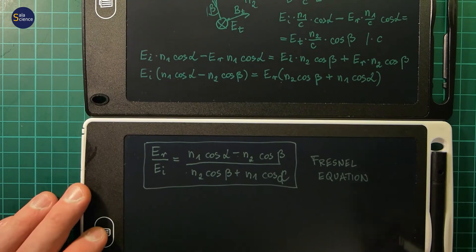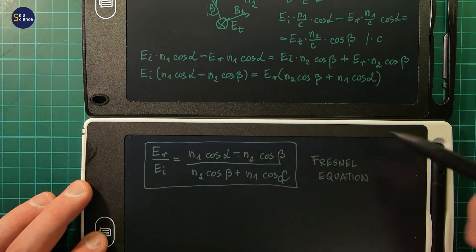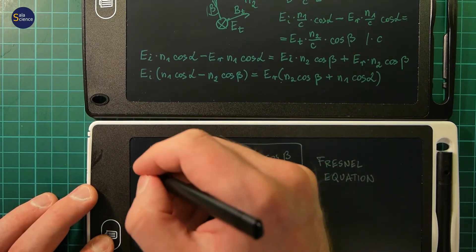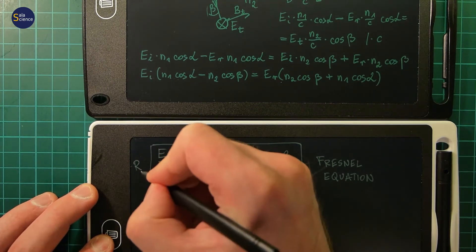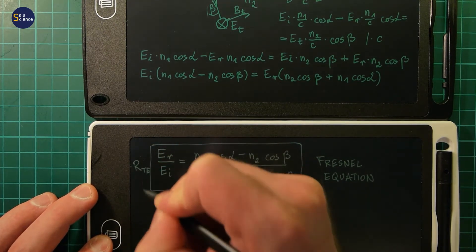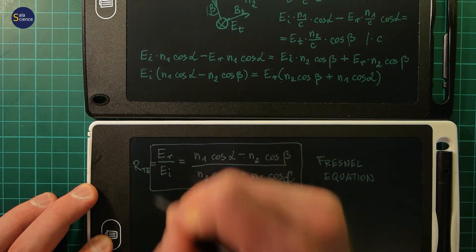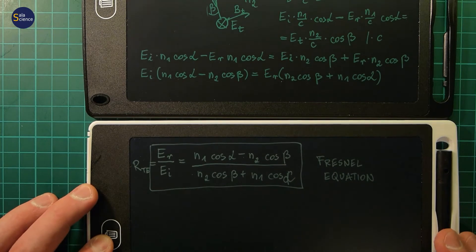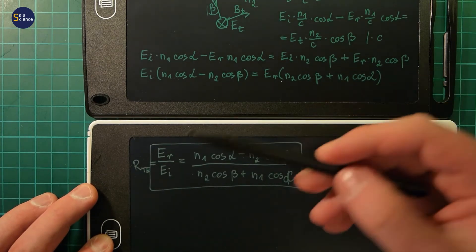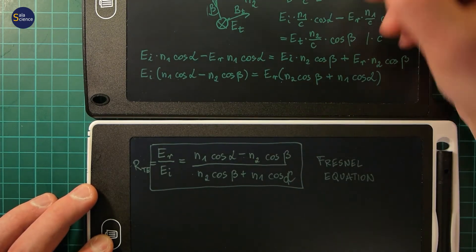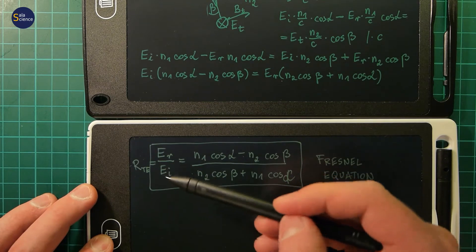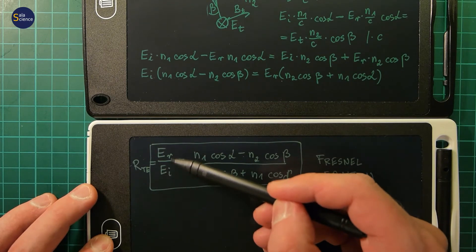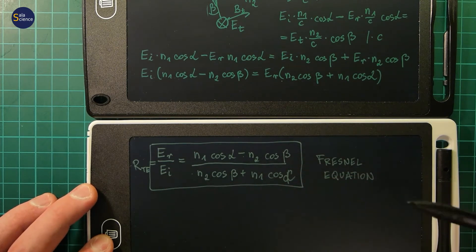This is the Fresnel equation describing the reflection coefficient for TE modes, RTE. It equals n1 cosine alpha minus n2 cosine beta, over n2 cosine beta plus n1 cosine alpha. So RTE is the ratio of the reflected electric field to the incident electric field at the boundary.